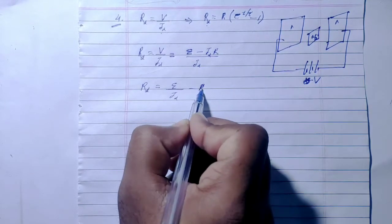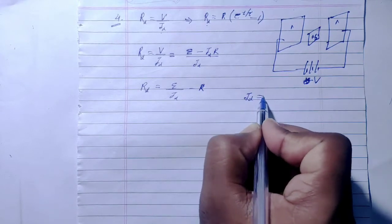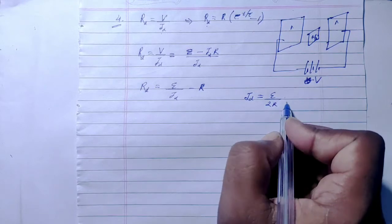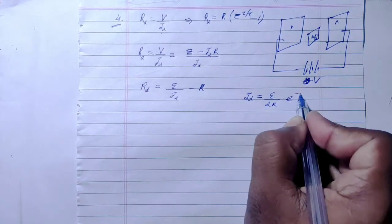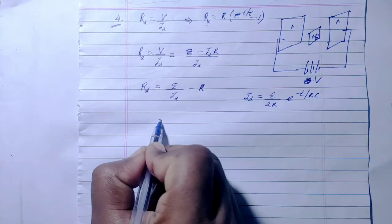Substituting this value, we get R_d = EMF/[(EMF/2R) × e^(-t/RC)] - R.